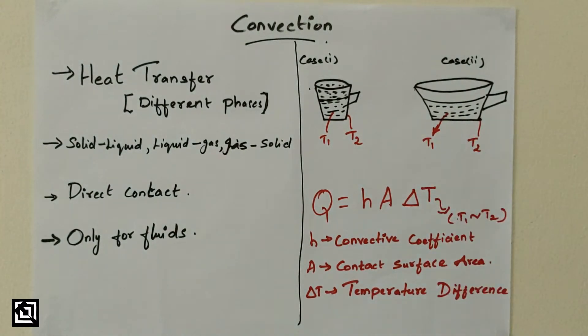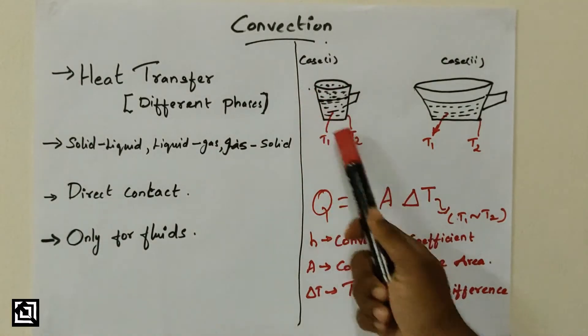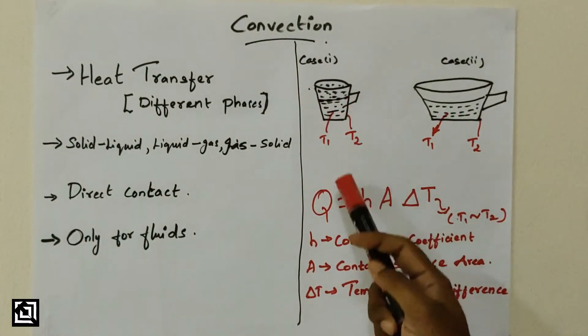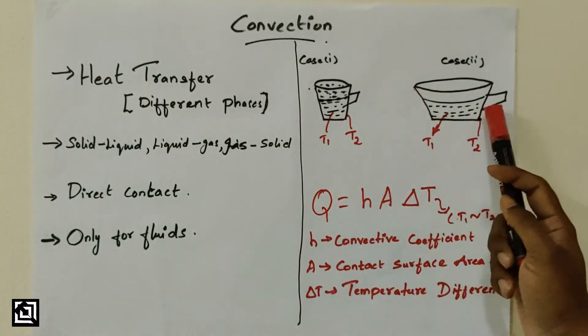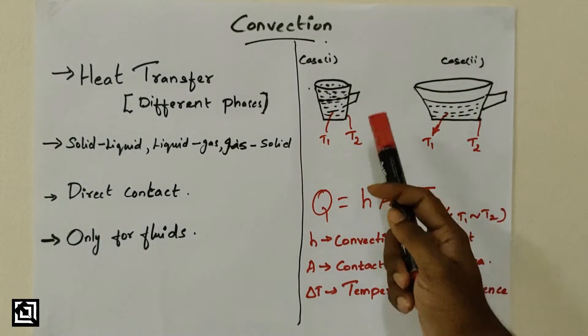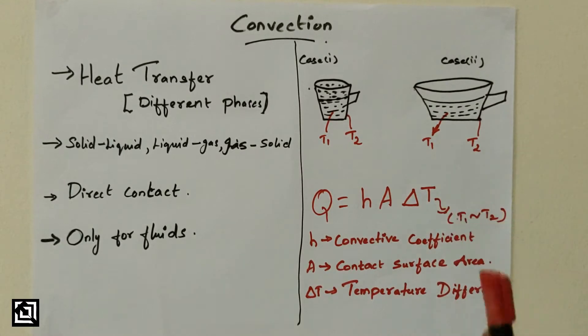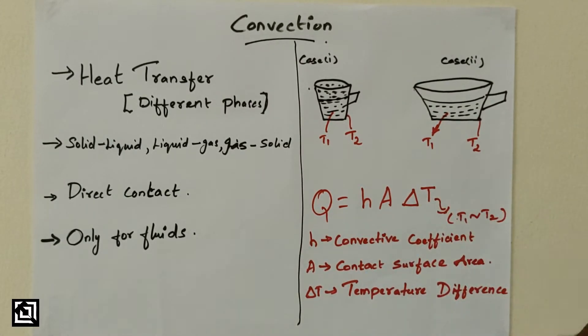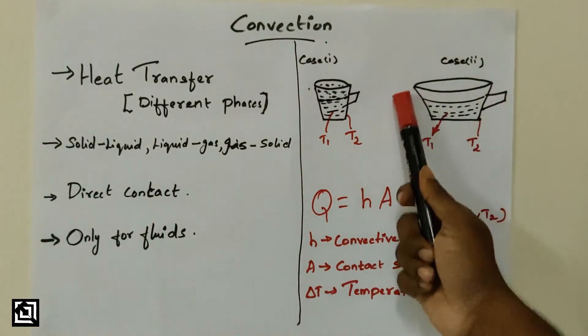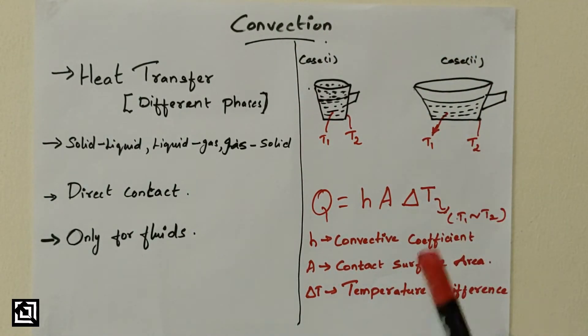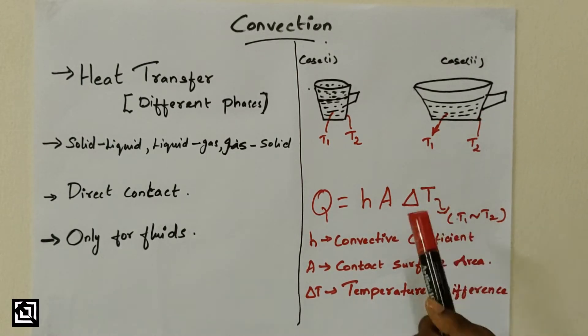h is constant, ΔT is constant. In the contact area, in case 1 small cup and case 2 big vessel, the contact area is different. In case 2, the contact area is larger, so heat transfer is greater.